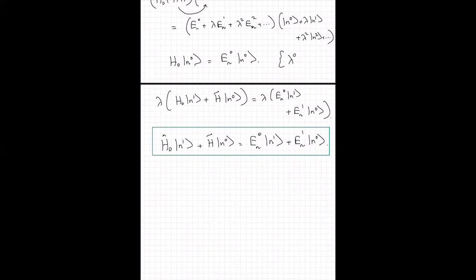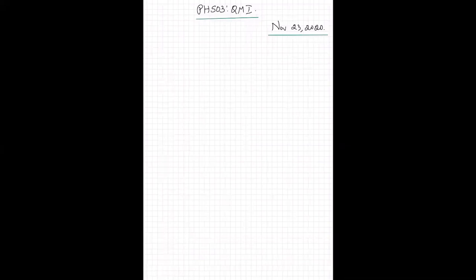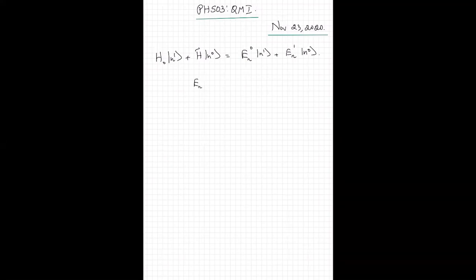The first-order terms of this Hamiltonian are: H0 times the first-order correction to the nth eigenket, plus the perturbation times |n0⟩. A more correct notation would be to put the superscript inside the bracket to make clear this is not a superscript but actually the zeroth-order energy. Since it is a little cumbersome to write, I will just follow this notation.